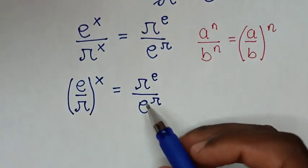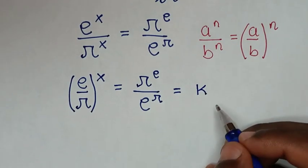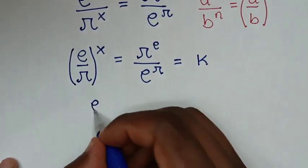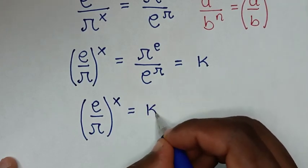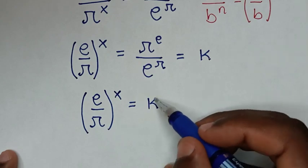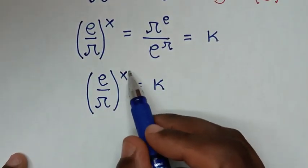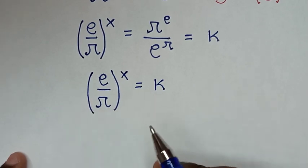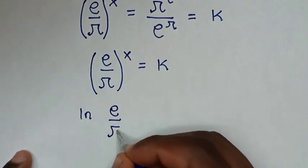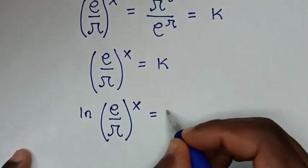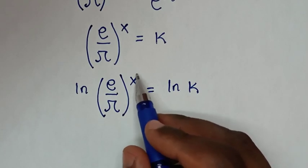The right-hand side π^e / e^π is a constant, which we call k. So we have (e/π)^x = k. To find x, we apply the natural log (ln) to both sides. In the next step, ln of (e/π)^x equals ln(k).